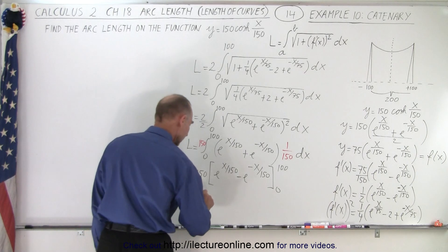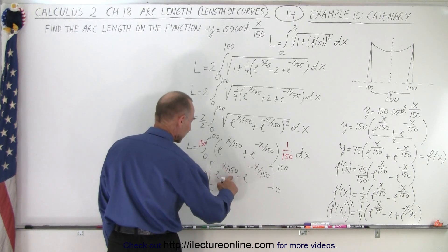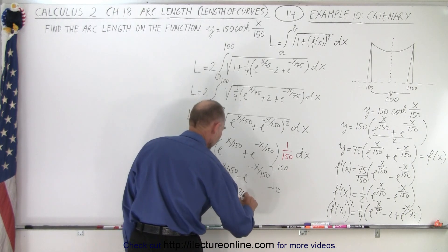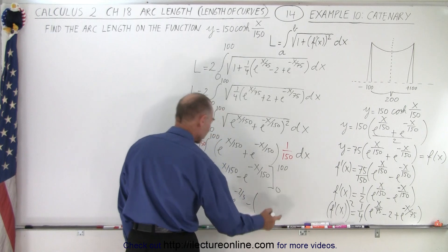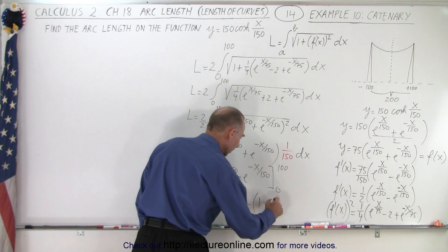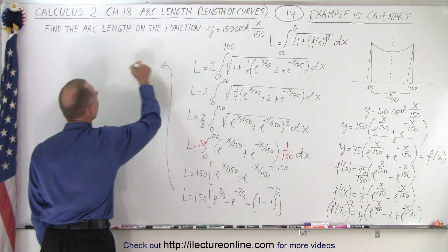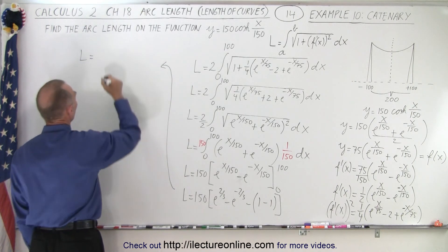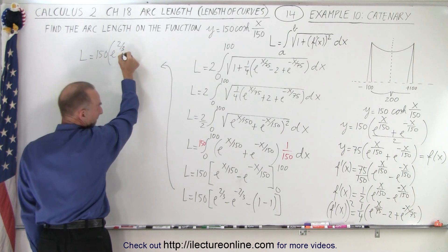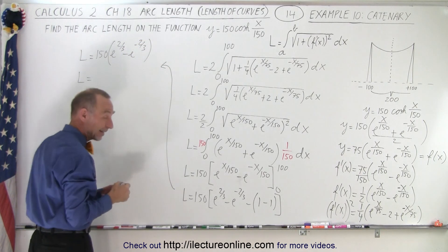Plugging in the upper limit: L equals 150 times e to the 100 over 150, which is 2 thirds, minus e to the minus 2 thirds. For the lower limit, e to the 0 is 1 minus e to the 0 equals 1, and those cancel out. So the length equals 150 times the quantity e to the 2 thirds minus e to the minus 2 thirds.